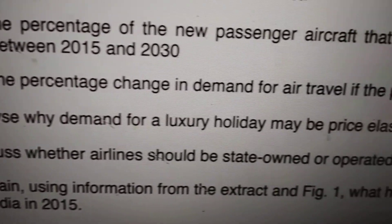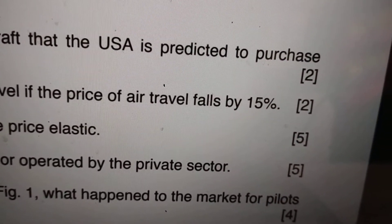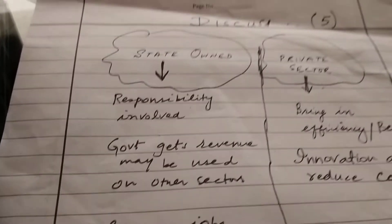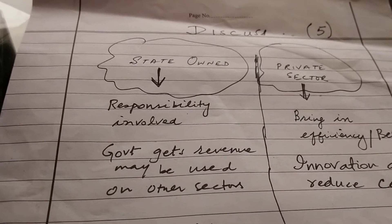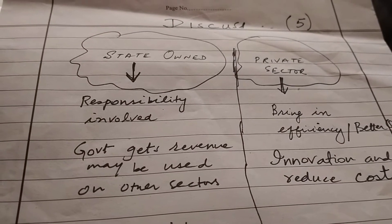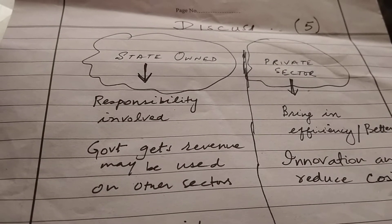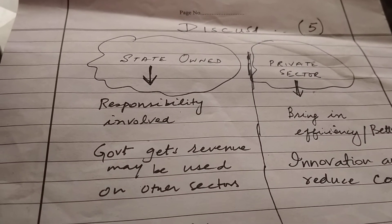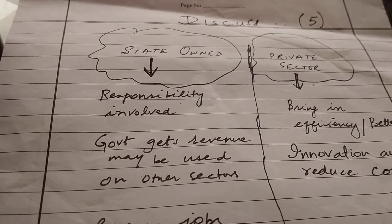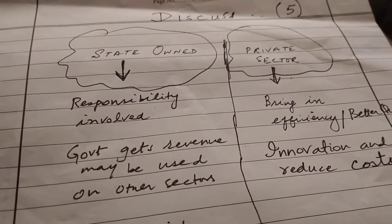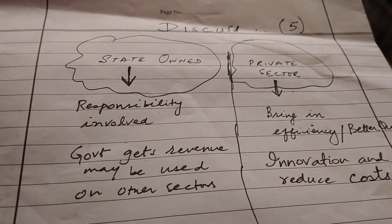The question for part E is: 'Discuss whether airlines should be state-owned or operated by the private sector.' It is a five-mark question. Remember, this is a 'discuss' question. There are four command words in Economics O Levels: part A is always 'define' or 'identify,' part B is 'explain,' part C is 'analyze,' and part D is a 'discuss' question.